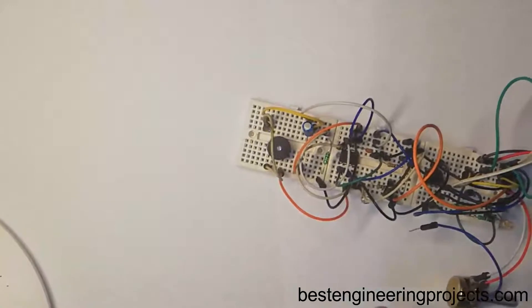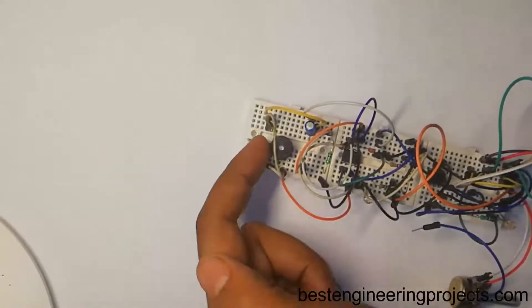As you can see the output of the circuit, whenever light is interrupted on the LDR, the LED starts to glow and the buzzer starts to buzz.